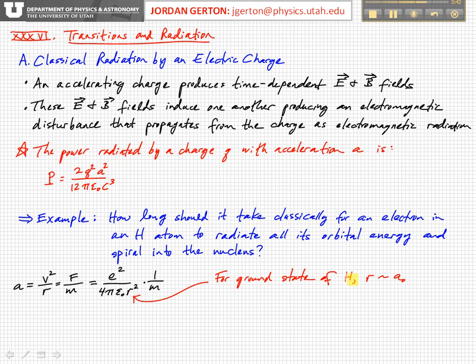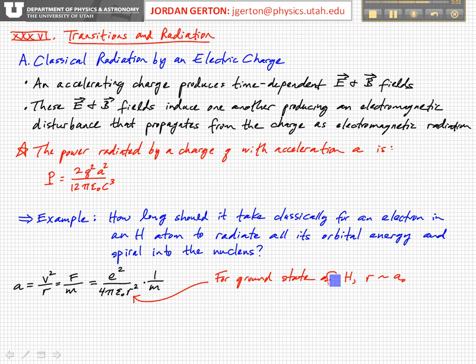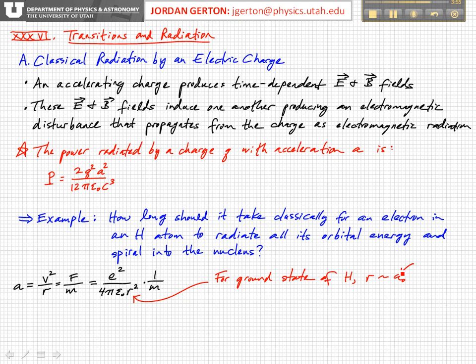For the ground state of the hydrogen atom, then the radius of the orbit is approximately equal to the Bohr radius. This is the Bohr radius, as we've seen before.